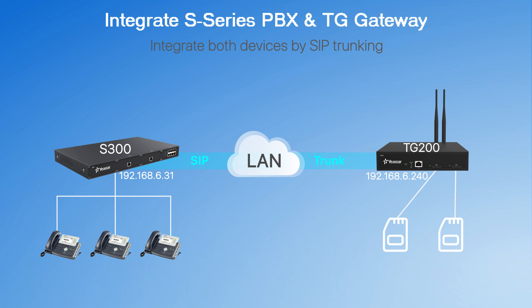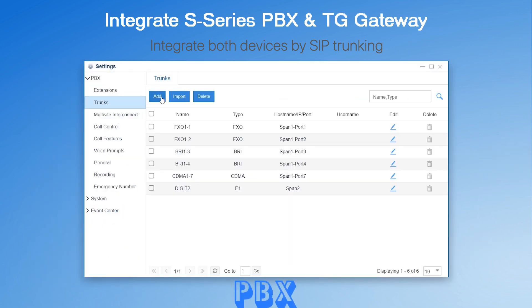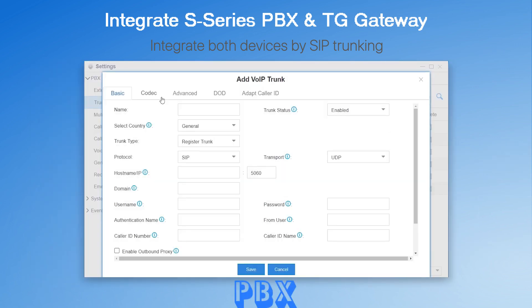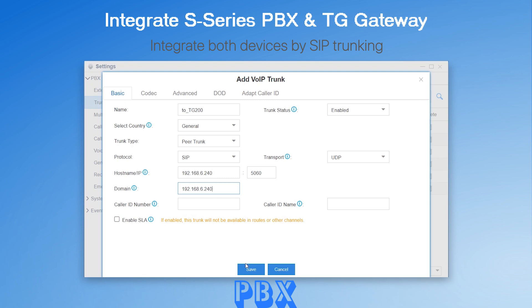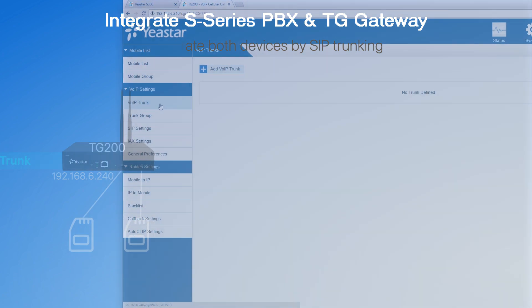Since the two devices are in the same LAN, we can create the trunk directly. But if the two devices are deployed in different remote offices, remember to enter their static public IP or domain names instead. On the PBX side, add a peer trunk to access the TG Gateway, then check the registration status and confirm the connection.